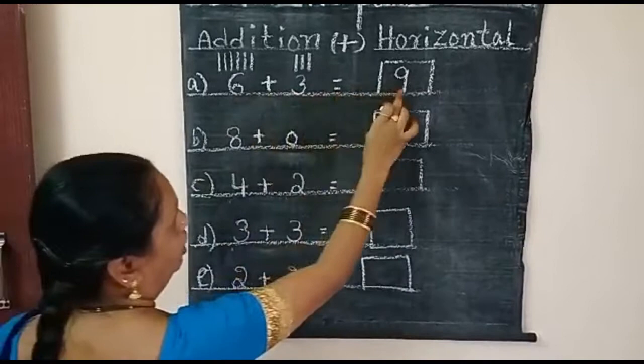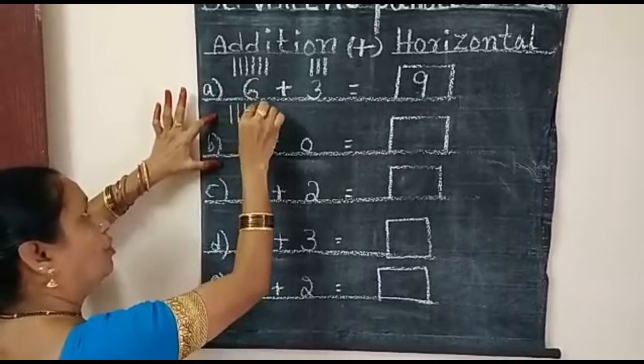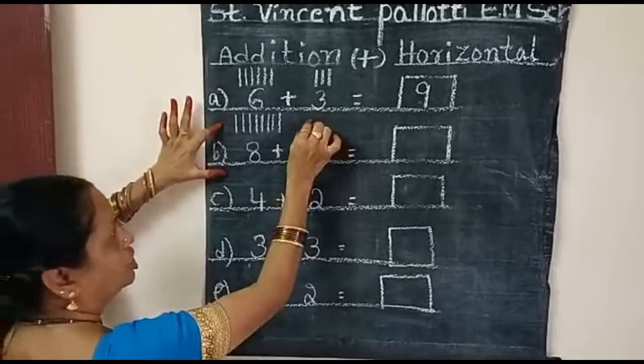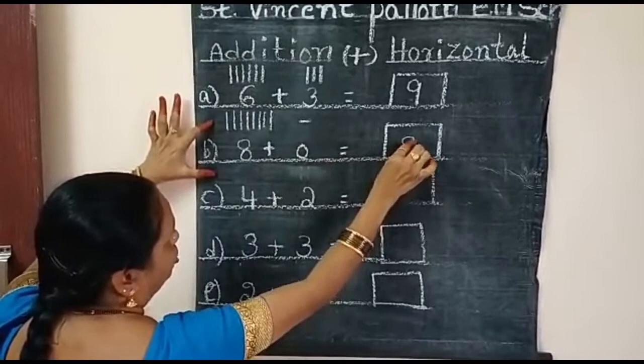Again. What number is this? Here eight. Draw eight lines: one, two, three, four, five, six, seven, eight. Here zero. Zero has no value. So no lines. Again count: one, two, three, four, five, six, seven, eight. Here answer is eight. Eight plus zero is equal to eight.